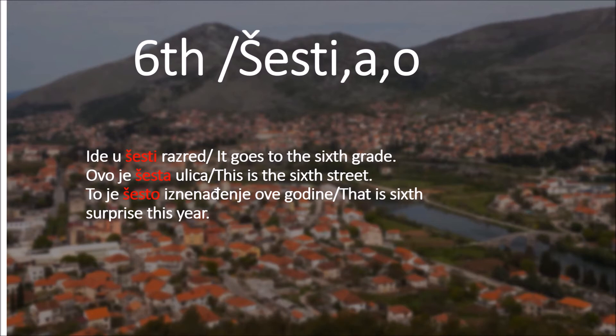Ovo je šesta ulica - this is the sixth street. Ulica ends on A, we know that means it is feminine. Therefore we are using šesta ulica. Last example: to je šesto iznenađenje ove godine - that is the sixth surprise of this year. Iznenađenje is neuter, therefore we're using šesto.